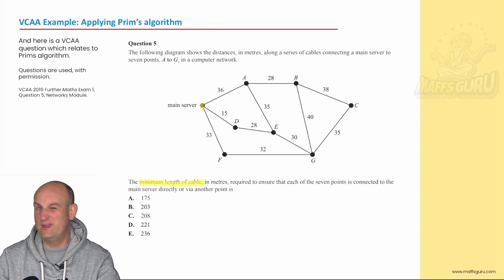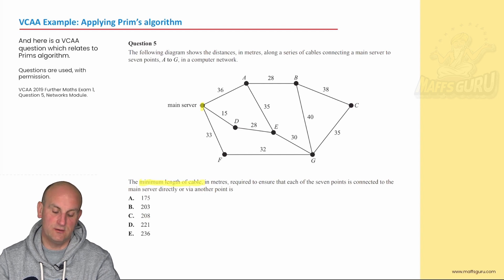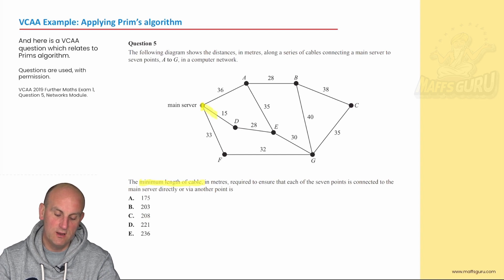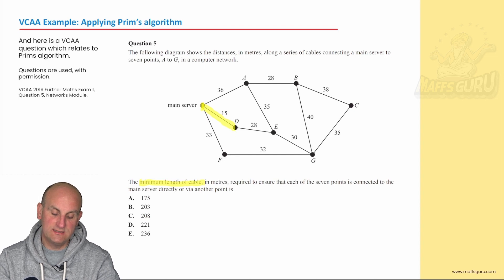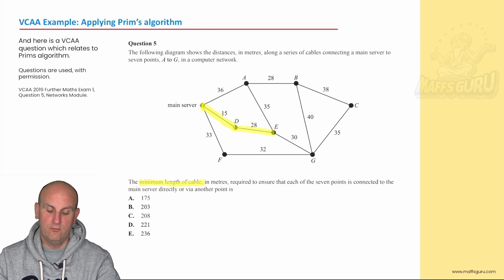Required to ensure that each of the seven points is connected to the main server directly or via another point is. So we've got to find the minimum distance. So we've got to do Prim's algorithm. I'm starting at the main server. And in that situation, they sort of told you how to connect to the main server, but we should theoretically speak and still be able to get there regardless of which point I started with. What have I got? Smallest value coming off. The smallest edge is either I've got 36 coming off, 15 or 33. Well, in that situation, 15 is my smallest edge. I've now connected A and D together. I'm looking for my next smallest edge that comes off of A or D. Sorry, the main server or D. I keep saying A. I don't know why. Main server or D. What do we got there? 36, 28, 33. So we've got a 28 coming off there. There we go.